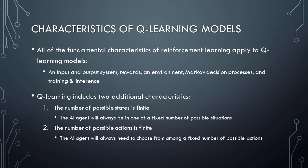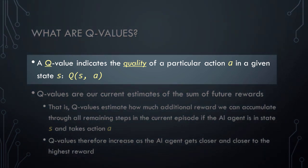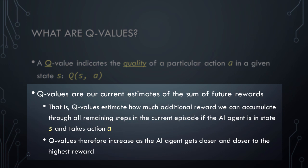In both of these scenarios, and indeed in all Q-Learning scenarios, the AI agent learns about the environment by relying on and updating Q values. A Q value indicates the quality of a particular action A in a given state S, which we can represent as a function Q with two input parameters S and A. Since the Q stands for quality, we can infer that the AI agent is interested in identifying the highest quality action in any given state. More formally, Q values are our current estimates of the sum of future rewards if we were to take a particular action at this moment in time — that is, how much additional reward we can expect to accumulate through all remaining steps in the current episode if the AI agent is in state S and decides to take action A.